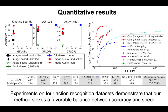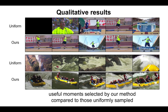Experiments on full action recognition datasets demonstrate that our method strikes a favorable balance between accuracy and speed. Qualitatively, we also find the useful moments selected by our method are more informative of the actions happening in the video, compared to those uniformly sampled.